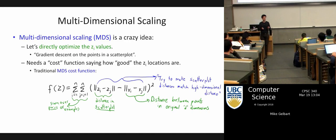We square the difference between those two distances — that's just how we usually deal with things when we're trying to make them close to each other: subtract them and square them. That's what we've been doing all term.